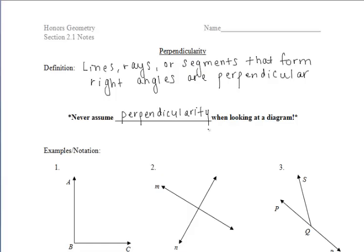I know it's easy to look at a diagram and think, oh yeah, we have some right angles there. But we have to be given some information. We cannot assume it.